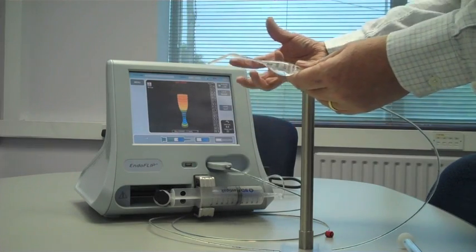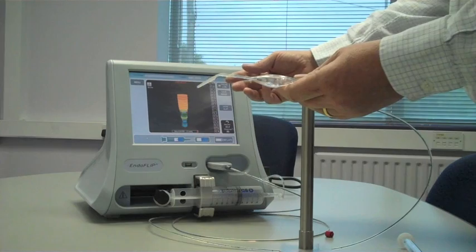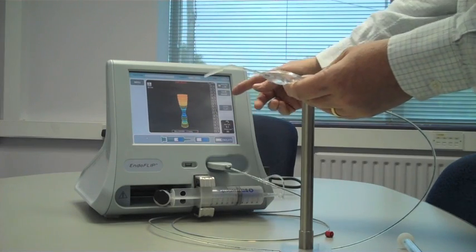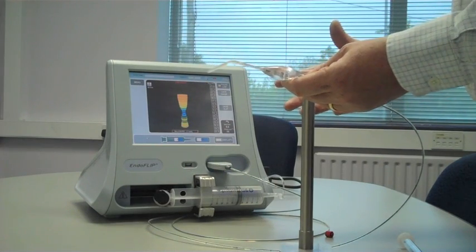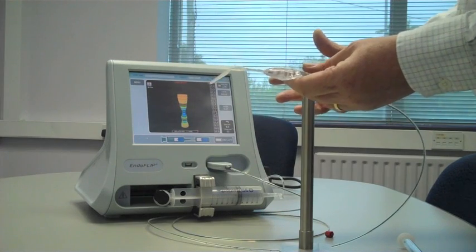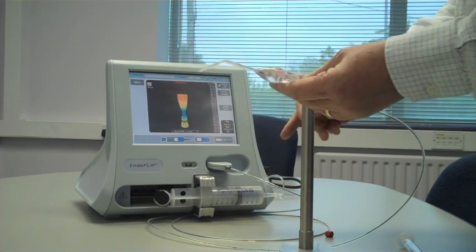This particular catheter has 16 electrodes, the one for lap band has 8 electrodes. But it's important that you center what you're measuring within the balloon, much like you would center a dilation balloon when doing a stricture dilation, for example.